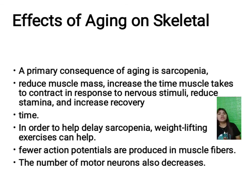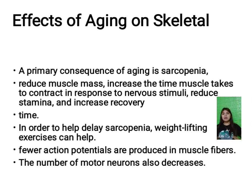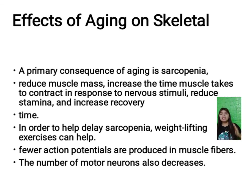Fewer action potentials are produced in the muscle fibers, and the number of motor neurons also decreases. Some muscle fibers that lose their innervation when a neuron dies are re-innervated by a branch of another motor neuron, making motor units fewer in number but with more muscle fibers per neuron, which may result in less precise muscle control.